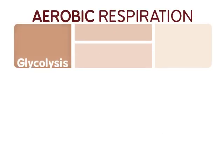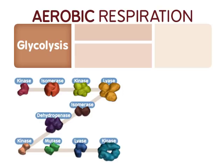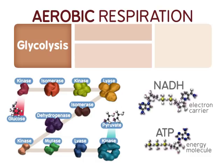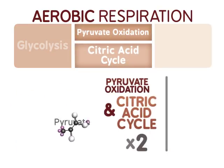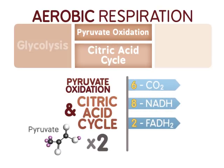Glycolysis is the first stage of aerobic respiration. During glycolysis, sugars are broken down and ATP and pyruvate are produced; glycolysis also generates critical electron carriers. Pyruvate is then modified during pyruvate oxidation and the citric acid cycle to generate carbon dioxide. During these steps, more electron carriers and ATP are produced.